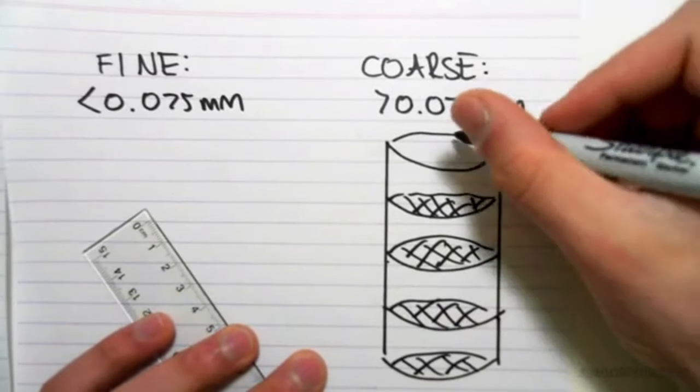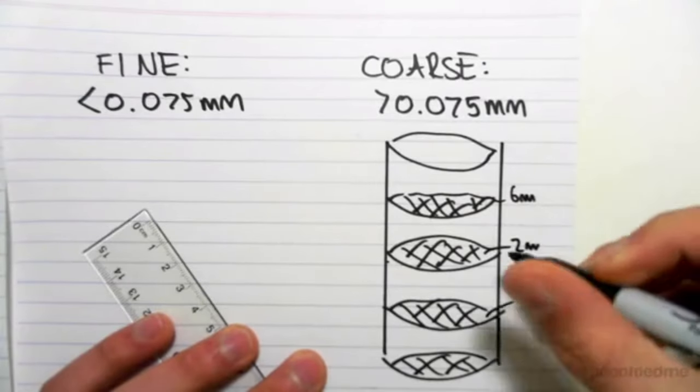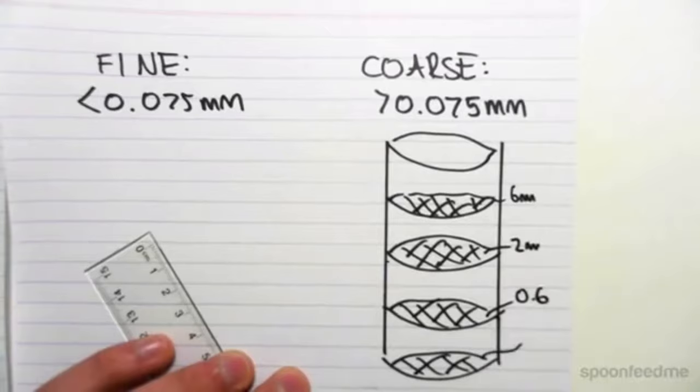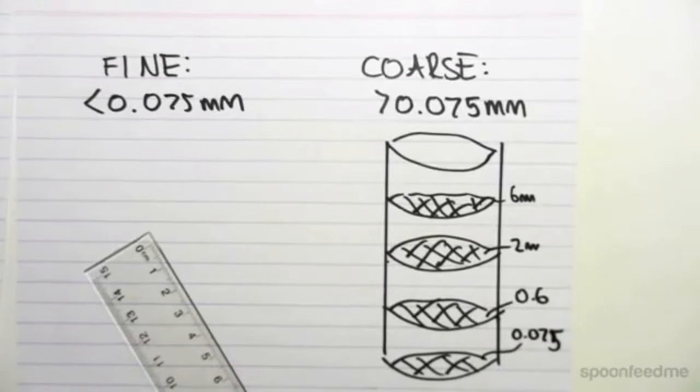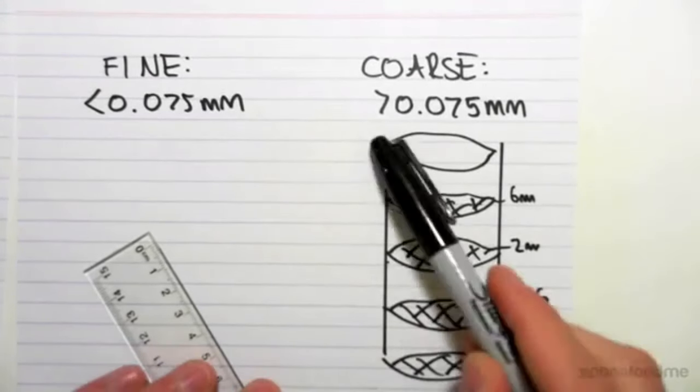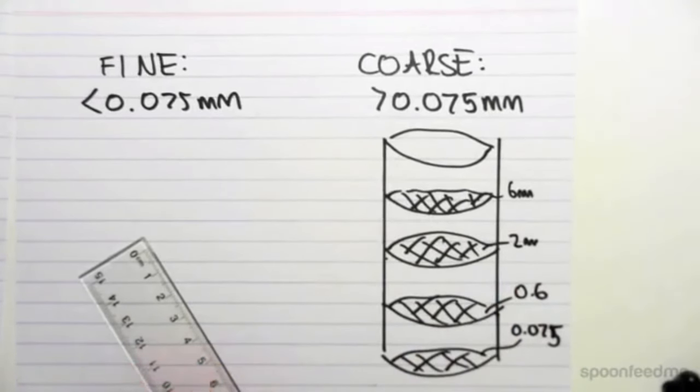Say this sieve is 6 millimeters. This one could be 2. This one could be 0.6. And the smallest we can ever get to is 0.075. This is the actual key parameter in determining what a coarse and a fine-grained soil is. A coarse-grained is defined as having a diameter greater than 0.075, because that's the smallest sieve size we can physically get to.